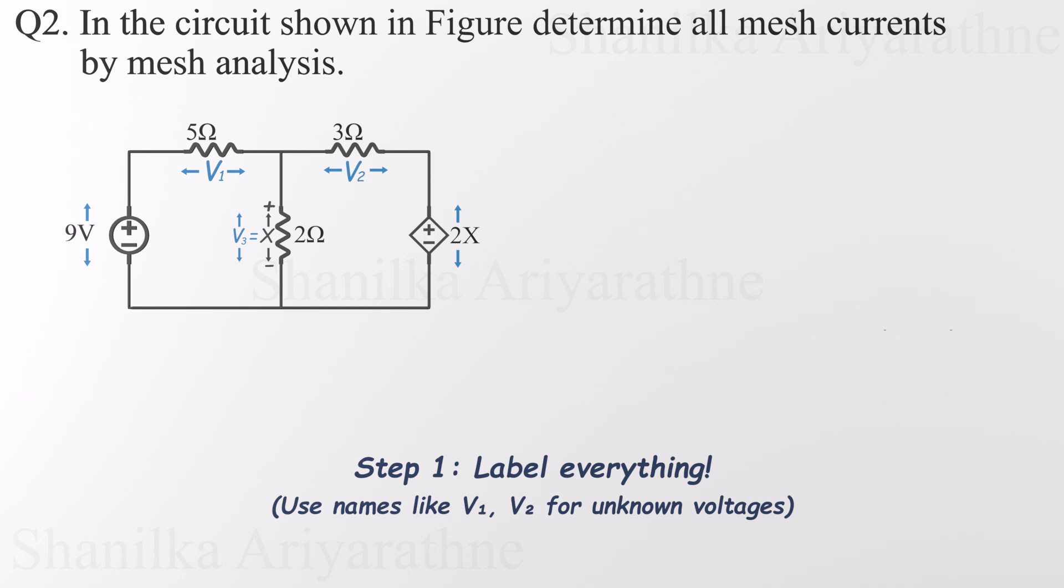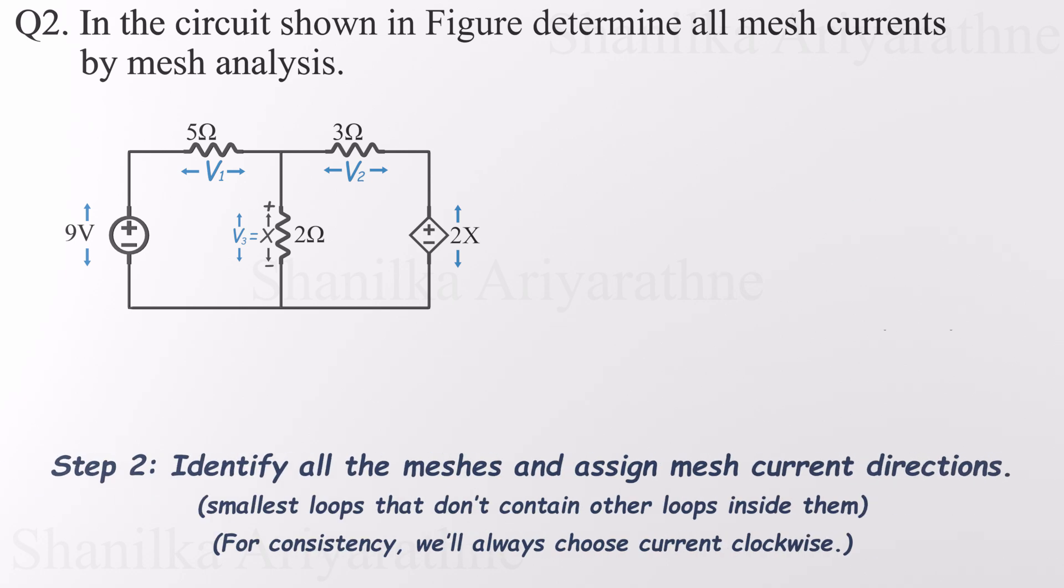Moving on to step two. Identify the meshes and assign current directions. Remember, meshes are the smallest loops in the circuit, and in this case, we've got two of them. Each one will get its own KVL equation. Now it's time to assign mesh current directions. While the direction is totally up to us, I'll go with the standard clockwise direction for both. It's consistent, neat, and makes the math a whole lot easier later on.